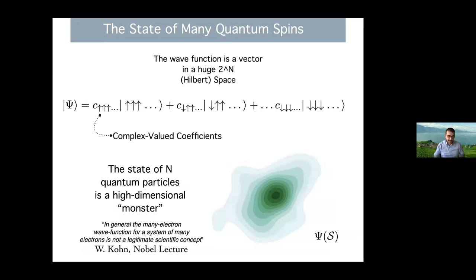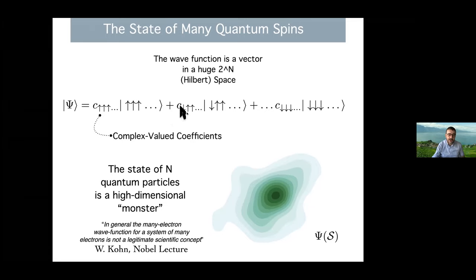For a single qubit, this is relatively simple theoretically — the only thing you need to describe this state are essentially two coefficients, c_up and c_down. These characterize, for example if you take the square of these coefficients, the probability of observing the spin up or down when you make a measurement. However, the situation becomes rather intricate when you consider instead many particles, many electrons, many spins. Because in that case, inevitably, one of the postulates of quantum mechanics tells us that now the state psi — your wave function — is a superposition of exponentially many possible states.